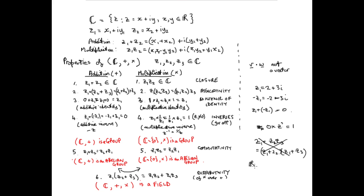The set of real numbers under addition and multiplication is also a field — all these properties hold for real numbers. The set of rational numbers, fractions of one integer divided by a non-zero integer, is also a field. However, the set of integers under addition and multiplication is not a field, because integers lack multiplicative inverses. For instance, the integer 2 has no multiplicative inverse within the integers — you'd need to multiply by one-half, which is outside the set.